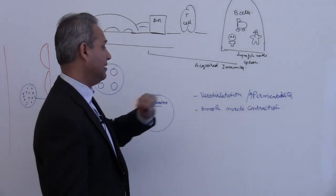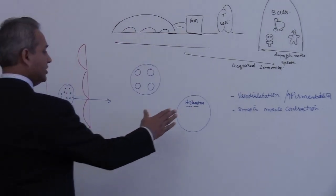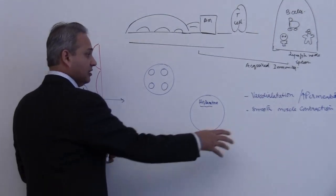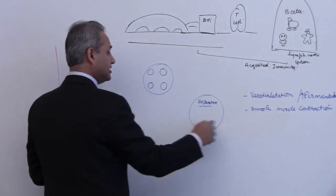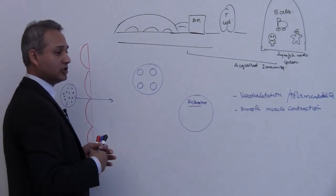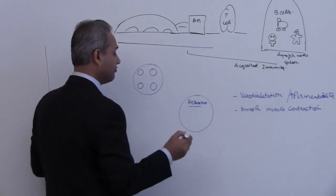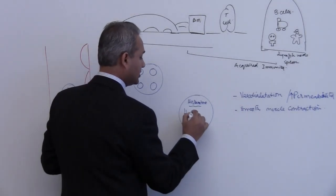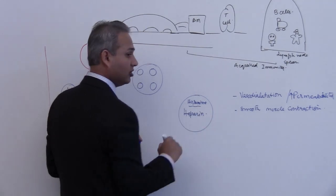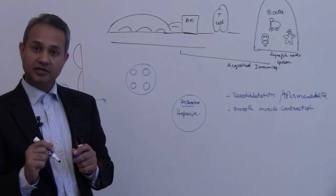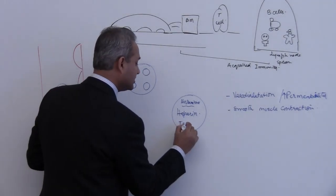So you have to understand why this happens. Once again, histamine is there. Histamine is a very potent vasodilator and smooth muscle contractor. Then we have heparin, which also has a similar effect on the system. Then we have tryptases.